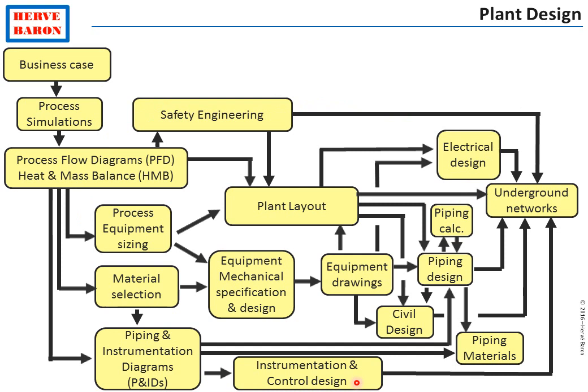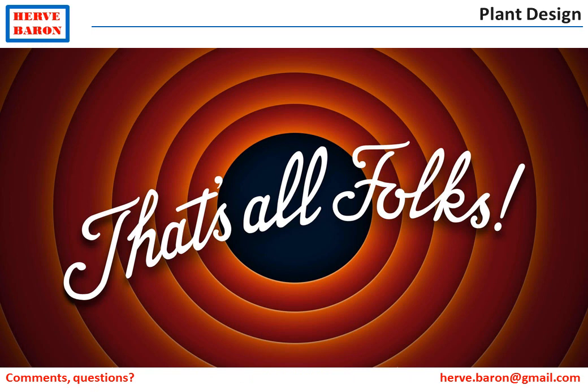We have now come to the end of this presentation. I hope you enjoyed this synoptic showing the interactions between the various engineering disciplines as well as the overall plant design sequence. Large projects are complex with many different activities and disciplines. One must be focused on the most important areas: ordering equipment, finalizing the plant layout and the P&IDs, and attending to the critical path of the project with ordering of piping materials and issue of piping isometrics.